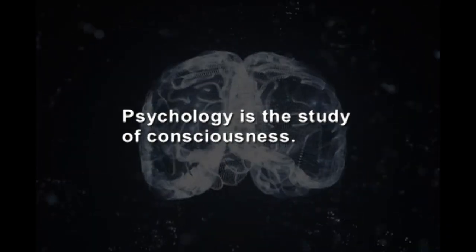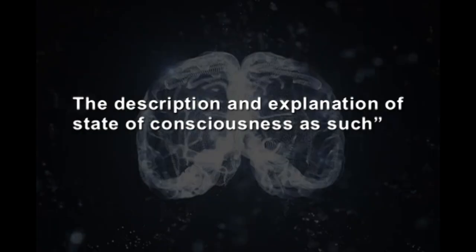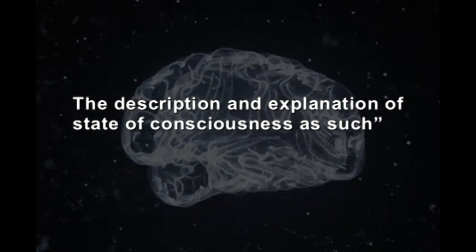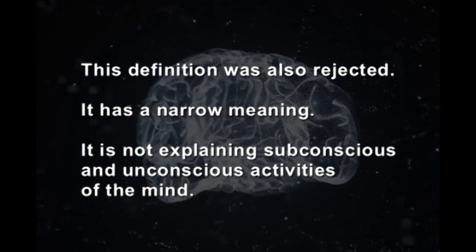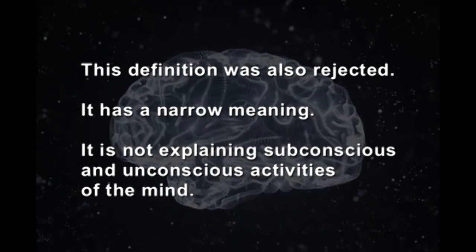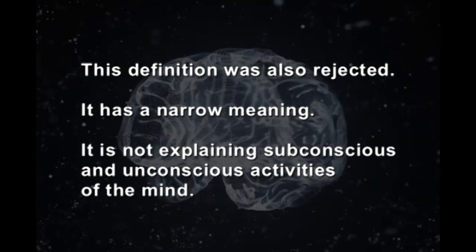The definition of psychology as a study of mind was also rejected because it did not explain what the mind actually is. Next, psychology was defined as a study of consciousness. William James, in his book 'Principles of Psychology' written in 1890, defined psychology as the description and explanation of states of consciousness. Edward Bradford Titchener defined psychology as the science of consciousness. This definition was also rejected as it had a narrow meaning — it did not explain subconscious and unconscious activities of the mind, and could not include the study of animal consciousness.